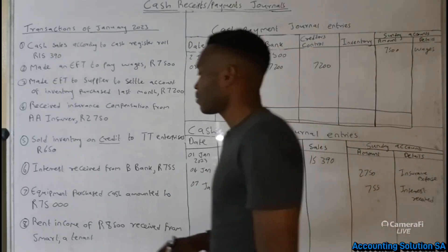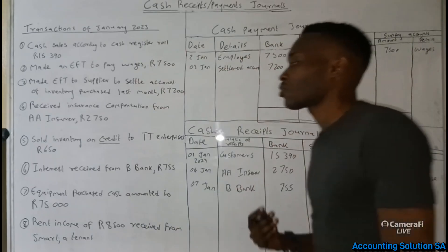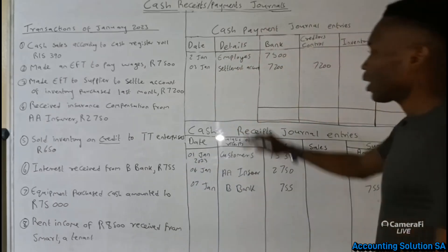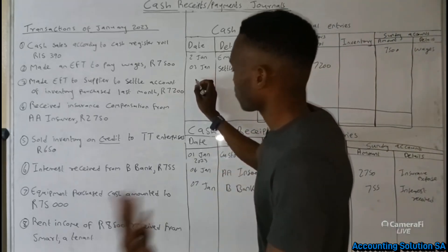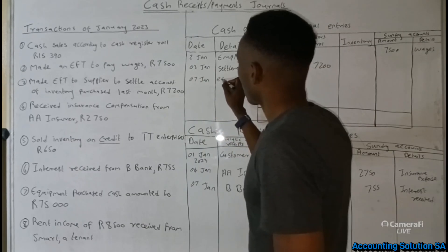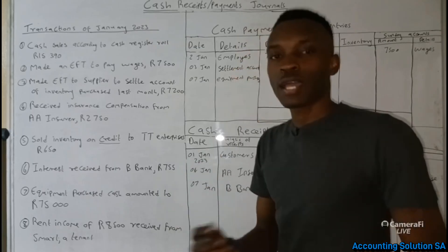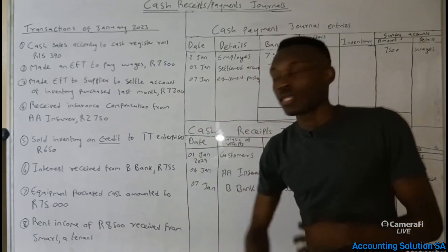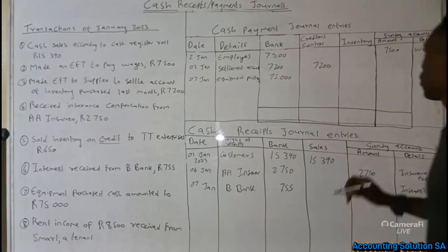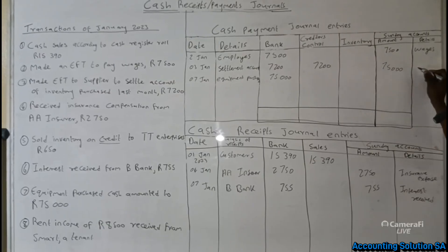Transaction number seven: equipment purchased for cash amounting to 75,000. This falls under cash payment general because cash has been paid. Date is 7 January, details say 'equipment purchased.' If we have the name of the company we purchased from, we write it in the details. The amount is 75,000. Since there is no column for equipment, we go to the sundry account and record 75,000 as equipment.